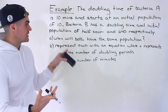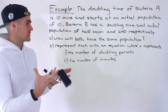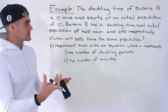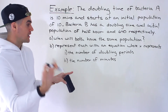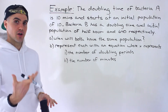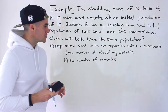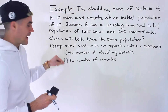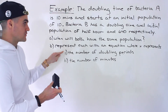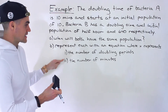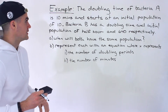Then in part B, we have to represent the quantity of each bacteria with an equation where X represents either part one — the number of doubling periods — or part two — the number of minutes. These two equations are going to be different. Usually textbooks at grade nine ask for the number of doubling periods, but I added the number of minutes in case your teacher wants to make it a bit more difficult.